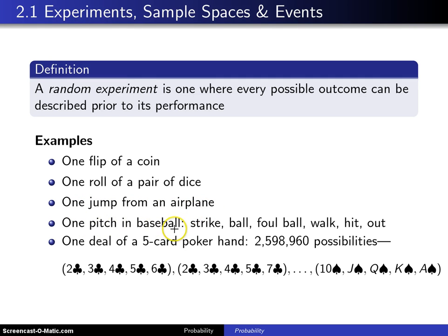One pitch in baseball. Lots of outcomes here. You could get a strike, a ball, a foul ball—that's one that isn't recorded—a walk, you could get on base, get a hit, or you could have an out.